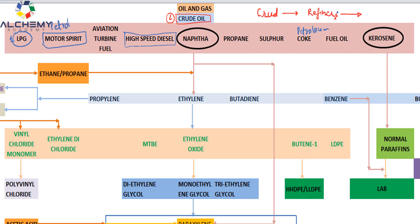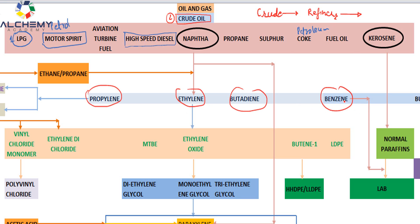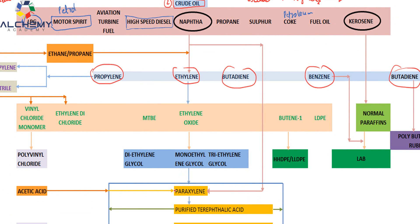Now here comes the petrochemical complex. Naphtha plays a very important role — it goes into the petrochemical complex. There are numerous compounds derived from naphtha. Some of them include propylene, ethylene, butadiene, benzene, and paraxylene.